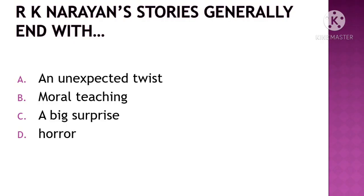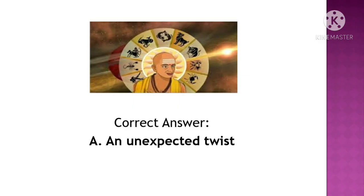Next question: R.K. Narayan's stories generally end with — the options are: A. An unexpected twist, B. Moral teaching, C. Big surprise, D. Horror. The correct option is Option A, an unexpected twist.